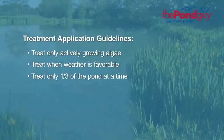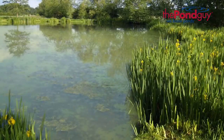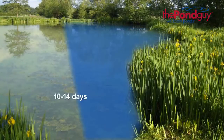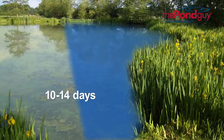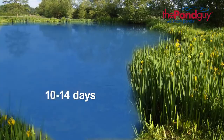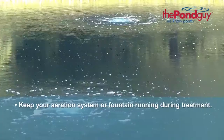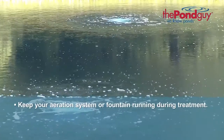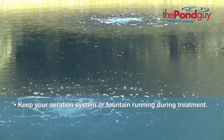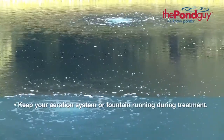Treat only one-third of the pond at a time. During hot weather, as algae dies off, it can reduce the amount of available oxygen in the pond. Treat your pond in small sections, waiting 10 to 14 days between treatments to ensure fish have an oxygen-rich environment. We always recommend keeping an aeration system or fountains running during treatment.